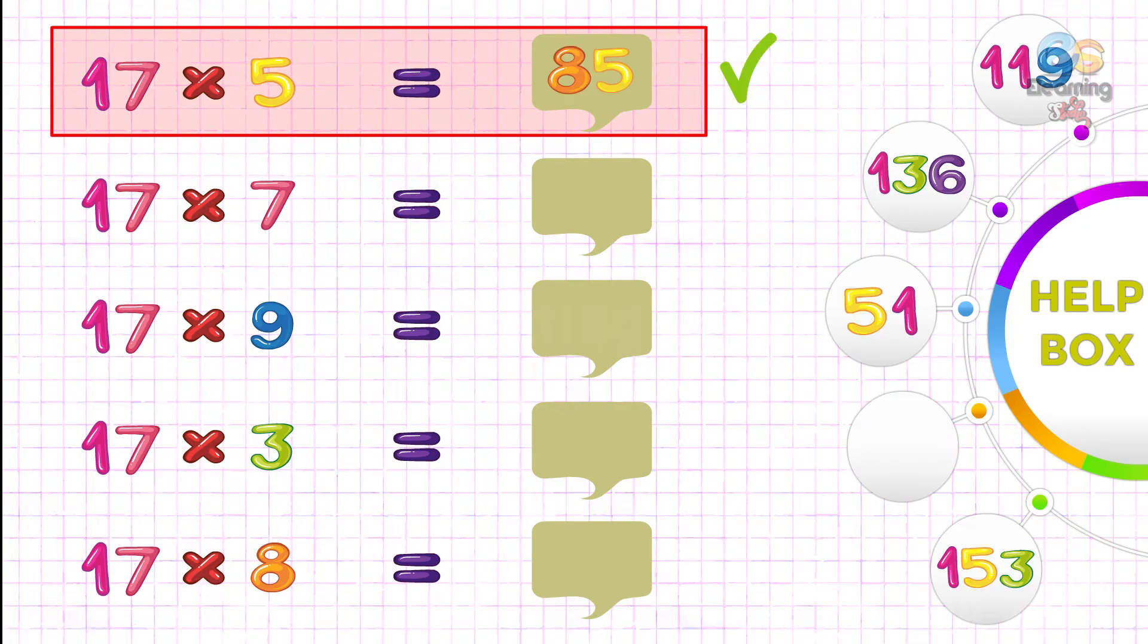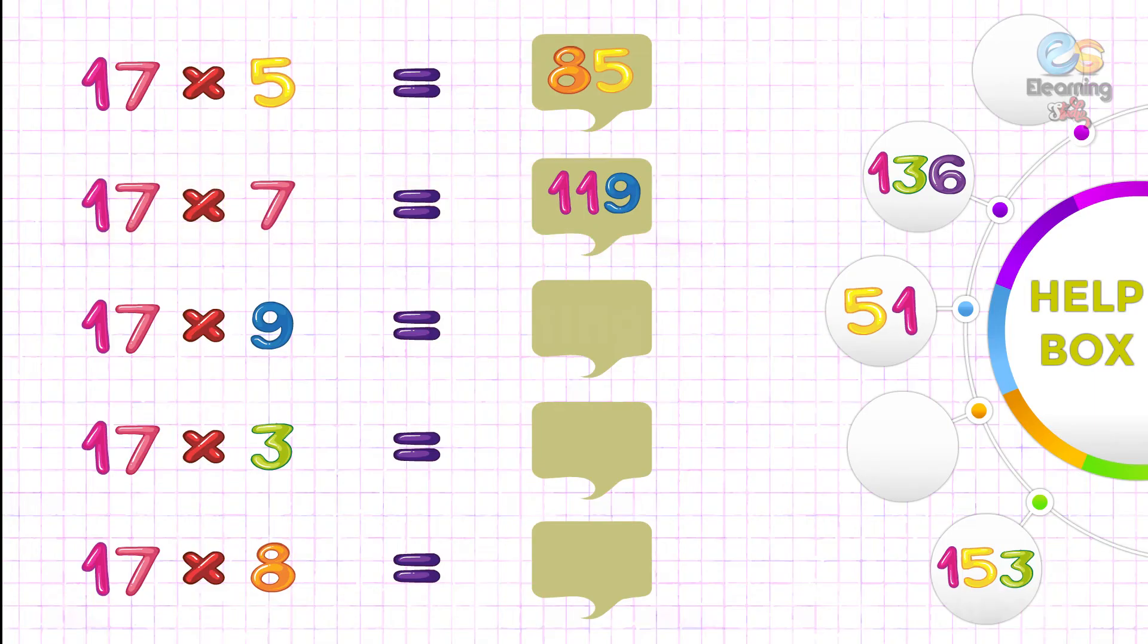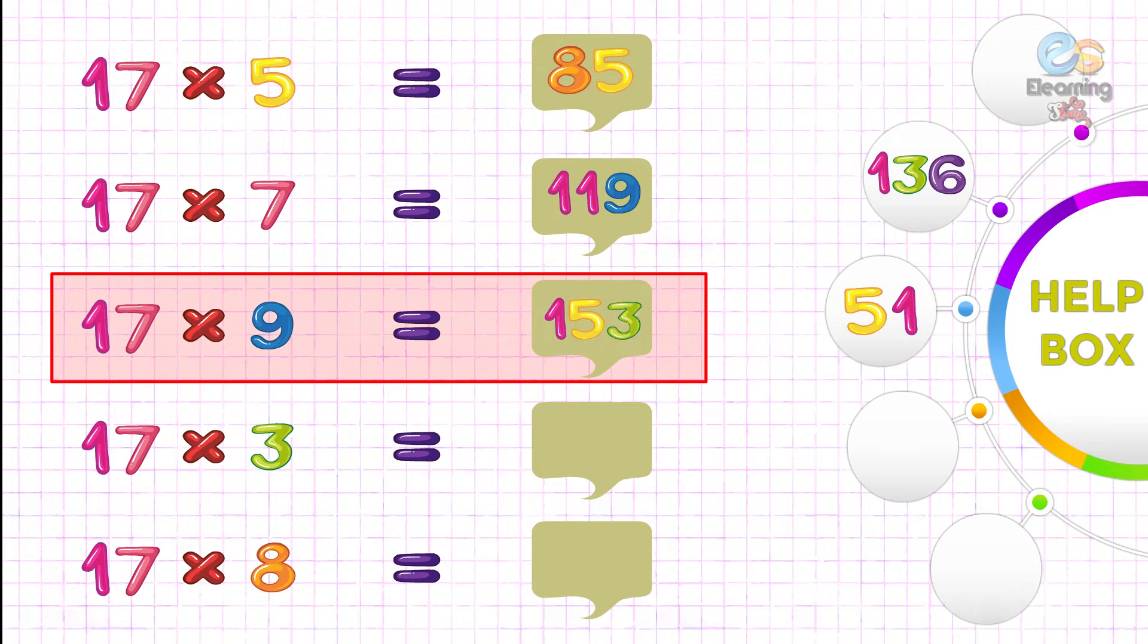Right answer. 17 sevens are 119. Right answer. 17 nines are 153. Right answer.